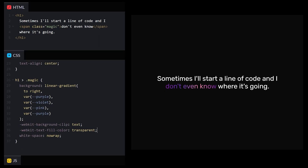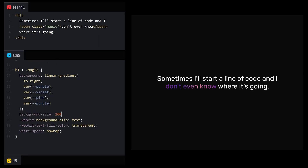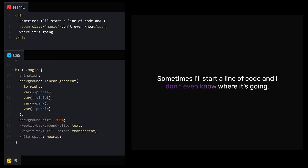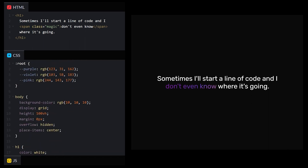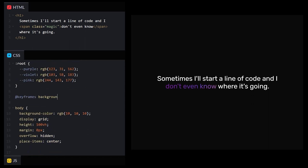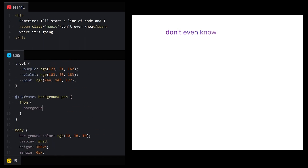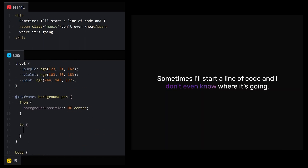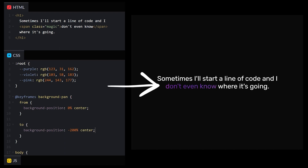Let's animate the gradient. By simply setting our background size to 200% and creating an animation to pan from 0 to negative 200% on repeat, we get an infinite looping effect that looks pretty dang sweet on its own.